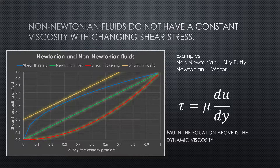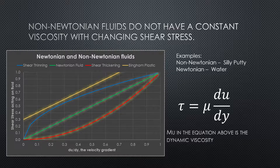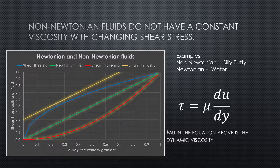In the equation on the right, you can see dynamic viscosity, or mu, multiplied by the velocity gradient, or the shear rate, is equal to the shear stress. When that term, mu, or the dynamic viscosity, is non-constant, the relationship between those two terms is non-linear.